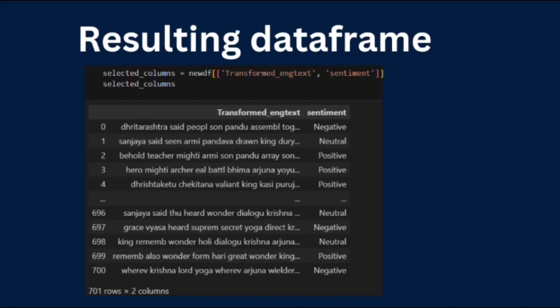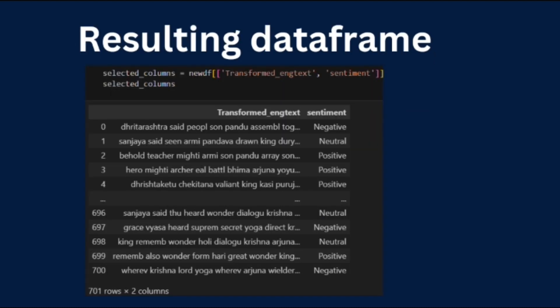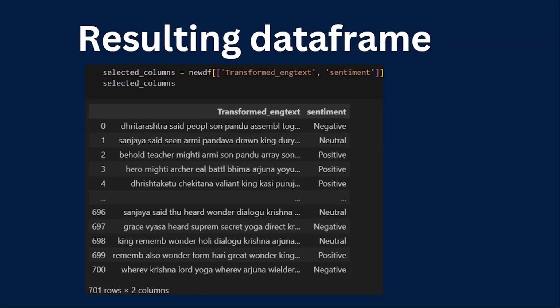After this, we added a new attribute — sentiment — to our dataset using the pandas library. The result, explained by Rohit, displays the Slokas along with their predicted sentiments. The processed Slokas make the sentiment prediction more accurate. When a Sloka is searched on the app, similar Slokas are recommended, giving the user a deeper understanding of that particular Sloka.